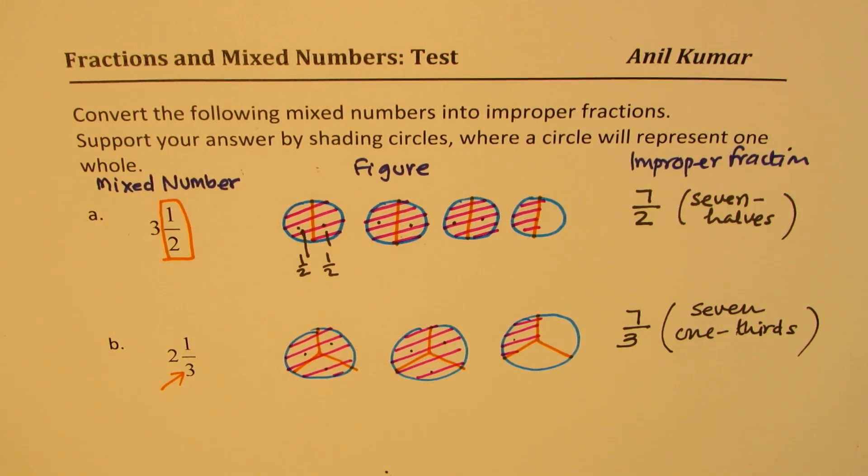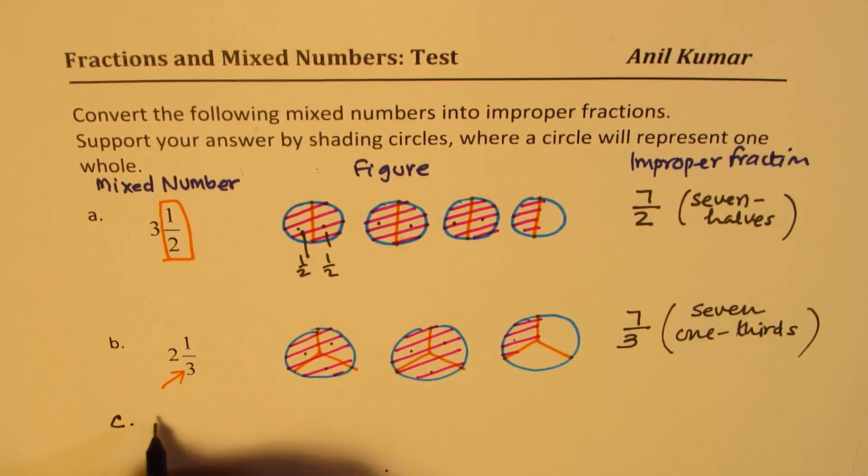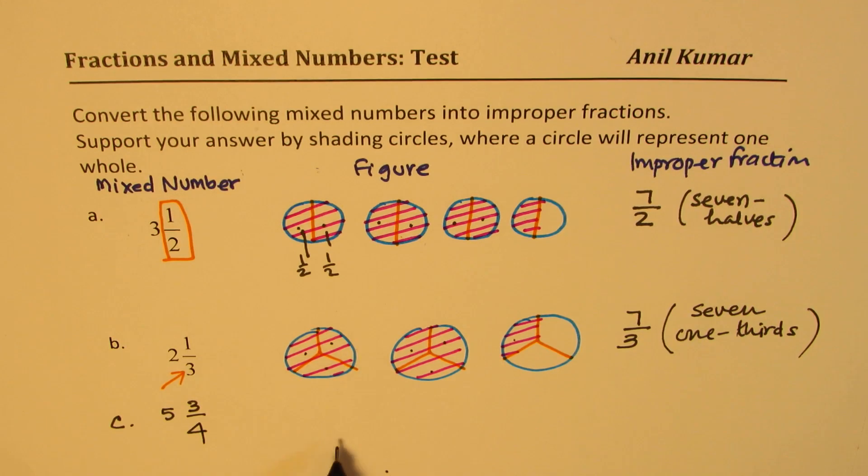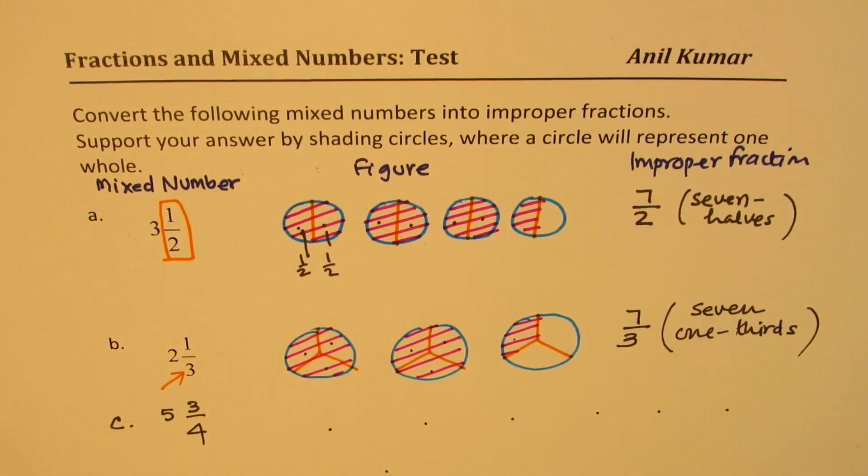So that is how you convert mixed numbers to improper fractions. This is for you to practice. This time we will say 5¾. I'd like you to draw here and then write down the improper fraction. That will be a practice question for you.